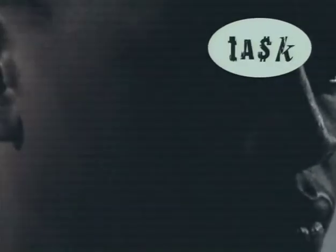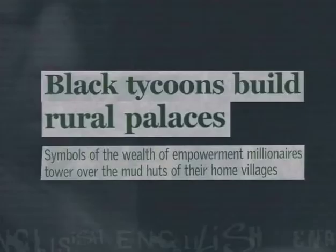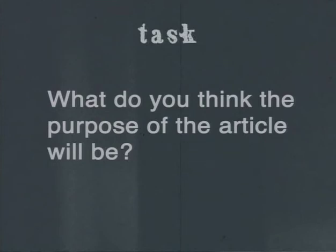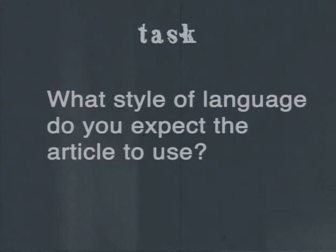To see how good you are at active reading, it's time for today's task. Look at the following heading and sub-heading taken from a newspaper article: 'Black tycoons build rural palaces' — 'Symbols of the wealth of empowerment millionaires tower over the mud huts of their home villages.' Now answer the following questions: What do you think the article is going to be about? What do you think the purpose of the article will be? What style of language do you expect the article to use? Remember to practise these surveying tips and read with a questioning mind until it becomes second nature. In the next lessons, we'll continue to develop our active reading skills, so I'll see you then.